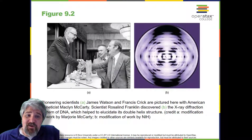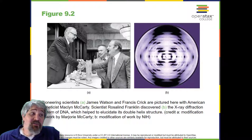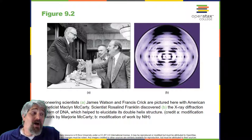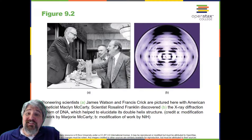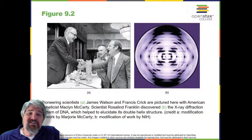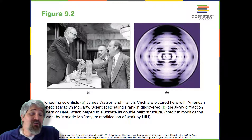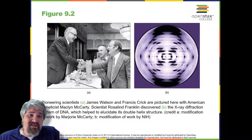In the 1950s, Francis Crick and James Watson worked together at the University of Cambridge, England to determine the structure of DNA. Other scientists, such as Linus Pauling and Maurice Wilkins, were also actively exploring this field. Pauling had discovered the secondary structure of proteins using X-ray crystallography, a method for investigating molecular structure by observing the patterns formed by X-rays shot through a crystal of the substance. The patterns give important information about the structure of the molecule of interest. In Wilkins' lab, researcher Rosalind Franklin was using X-ray crystallography to understand the structure of DNA. Watson and Crick were able to piece together the puzzle of the DNA molecule using Franklin's data — not necessarily with her permission.